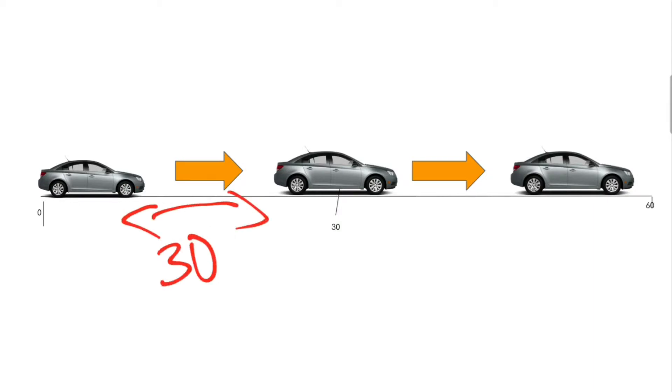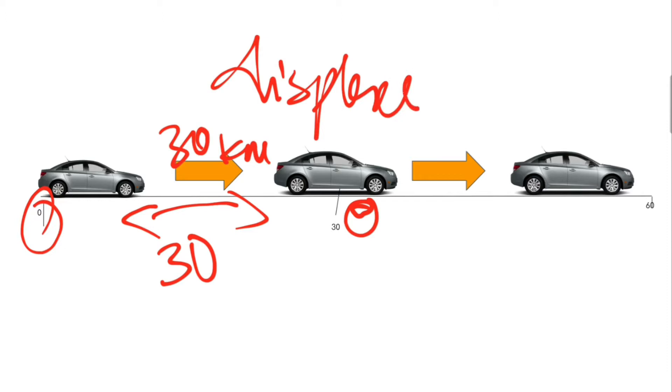Since the distance between the ending point of the car, which is here, and the starting point of the car, which is here, is 30 km, we can say that the displacement of the car is equal to 30 km.